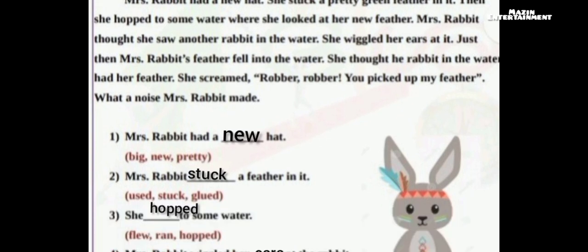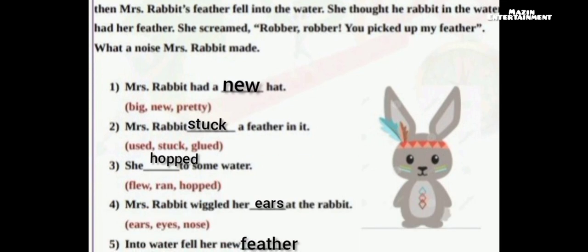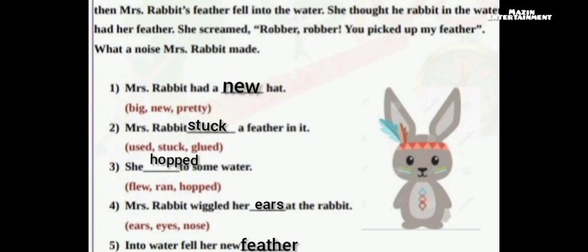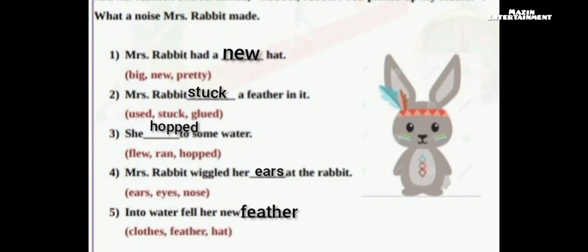First question: Mr. Rabbit had a ___ hat. Answer: New hat. Second question: Mr. Rabbit ___ a feather in it. Answer: Stuck. Third question: She ___ to some water. Answer: Hopped. Fourth question: Mr. Rabbit wiggled her ___ at the rabbit. Answer: Ears. Fifth question: Into water fell her new ___. Answer: Feather.